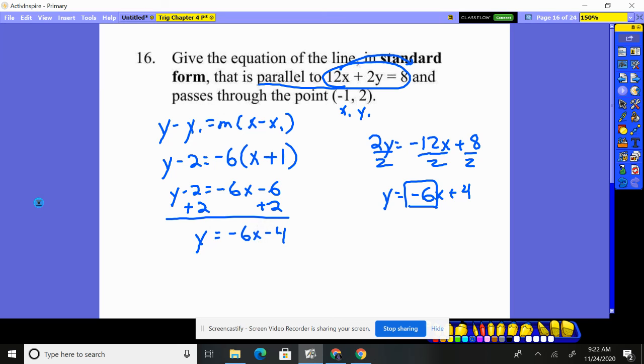-6x - 4. There's the answer in slope intercept form, but it wasn't standard. So it just means I got to move my x back over on the other side by adding 6x to both sides. And there you have it. 6x + y = -4.